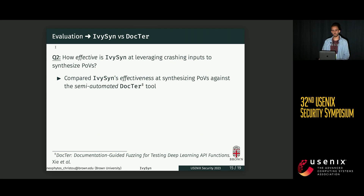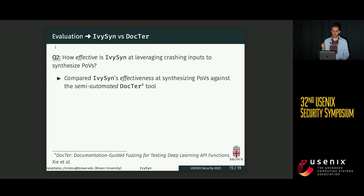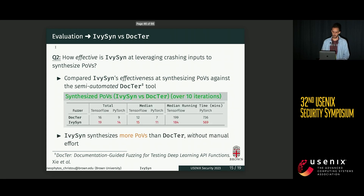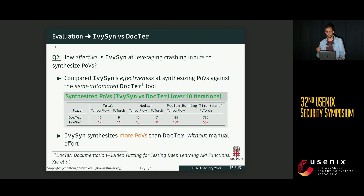To answer the second question — how effective is Ivysyn at generating POVs — we compared against another state-of-the-art tool called Doctor, which similarly produces Python-level snippets that trigger native crashes. Doctor is not fully automated; it requires manually written annotations to operate. In this table, we have the total and median number of POVs generated by each tool and the median runtime. Ivysyn outperforms Doctor: it generates more POVs, does so faster, and without the need for any manual effort.